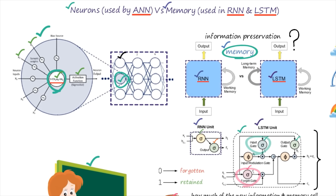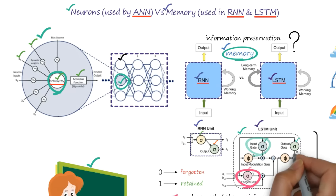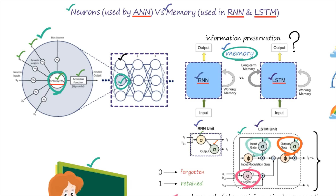To compare LSTM and RNN: the number of gates differs in the memory cell of the two networks. Since LSTM has three different gates inside a single memory, these three gates can control information retention, the amount of information, and the number of features. Therefore, LSTM is more useful than RNN.